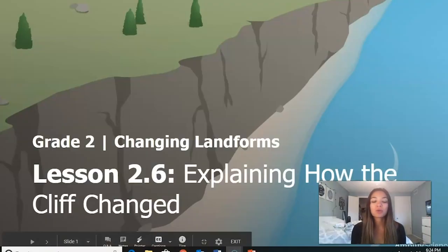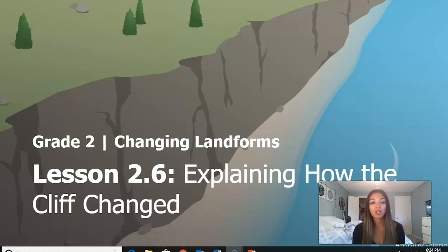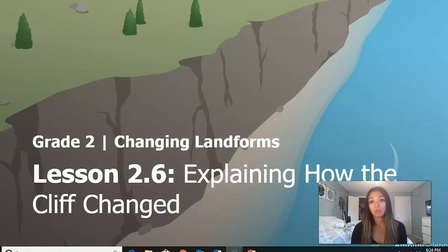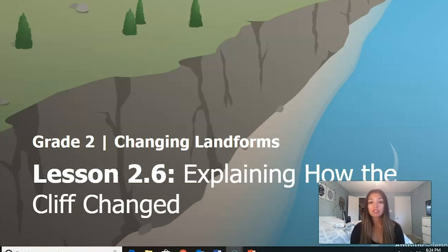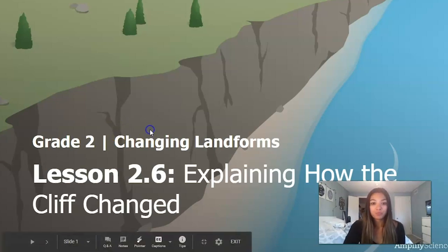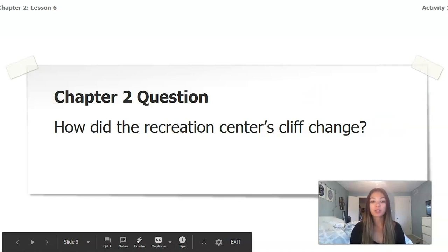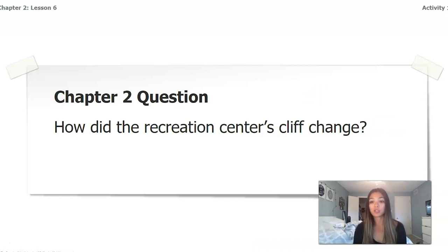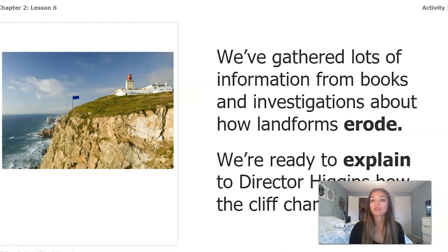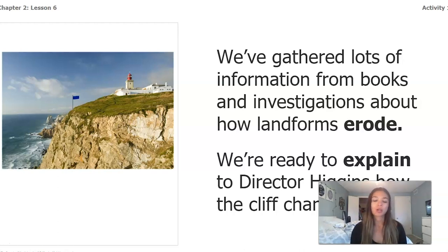Hi second graders! Today we're going to be still working on changing landforms — we're working on lesson 2.6. We are going to be skipping lesson 2.5 because we don't have the materials, but we're still in good shape to wrap up this chapter. Our chapter two question was: how did the recreation center's cliff change? We've gathered information from books and investigations about how landforms erode. Erode means to wear down or break away at something to make it into smaller pieces.